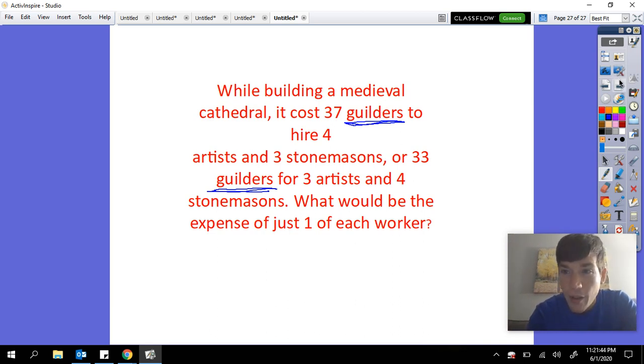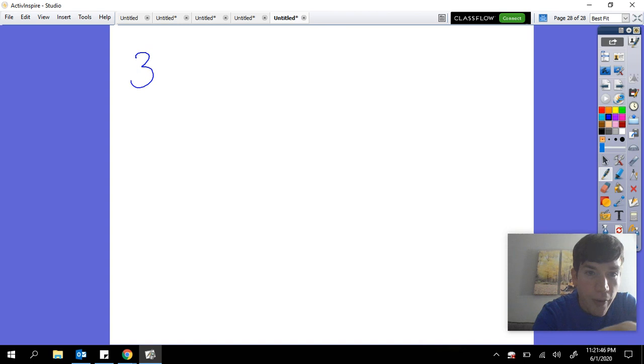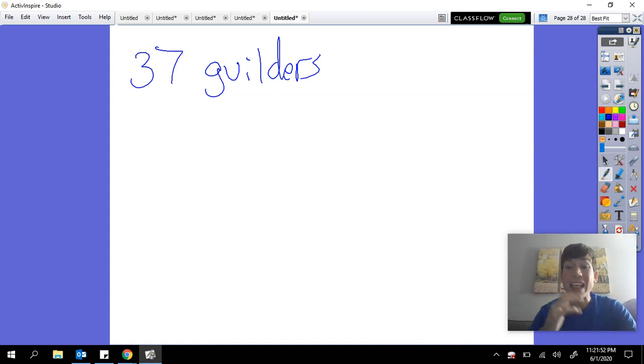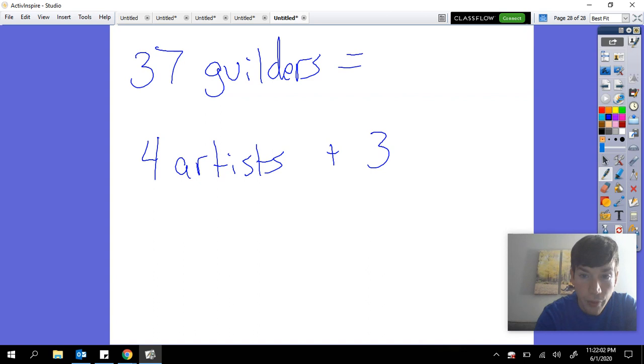So for 37 guilders, we get—I'm going to write equals—four artists plus three stonemasons. I'm just going to put SM for stonemasons. So for 37 guilders we get 4 artists and 3 stonemasons.